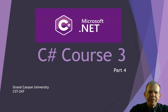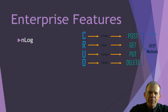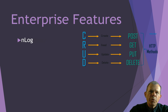Welcome to part four of our C# course. In this part of the course, we're going to work with some more enterprise features. First of all, we're going to work with the NLog framework, so that way we can track our errors and different events in our program and put them to a log file. This is more enterprise because people are interested in working on the efficiency of your application.